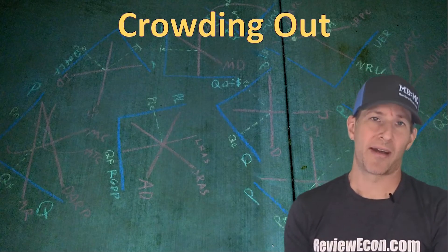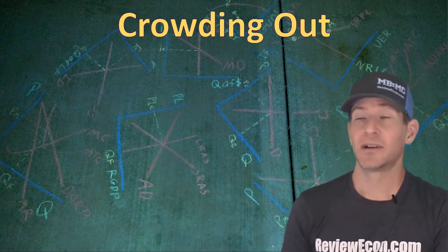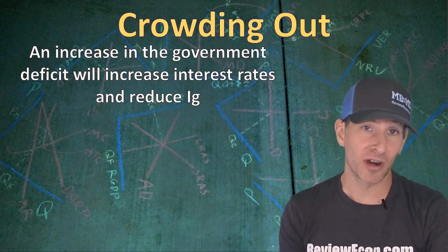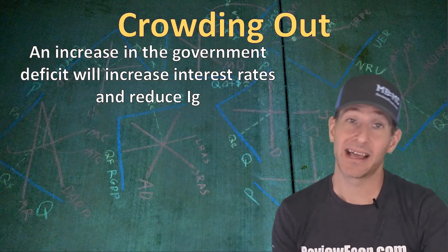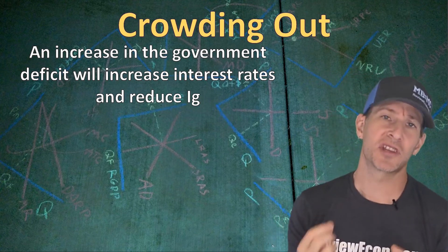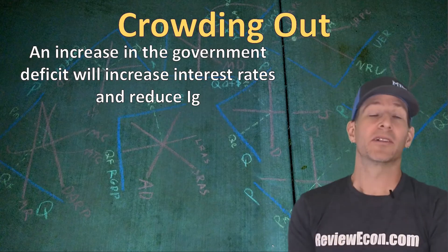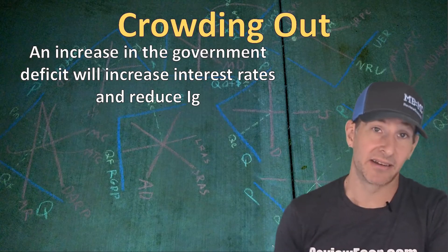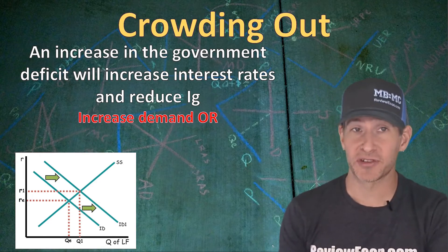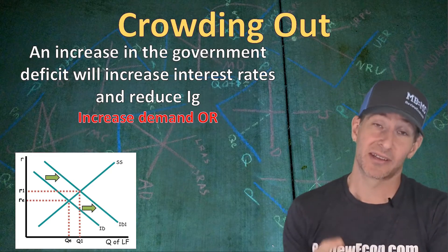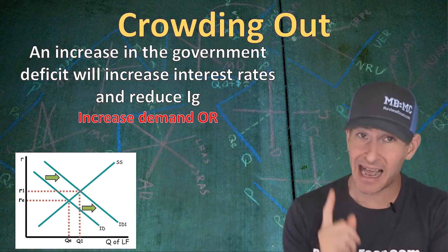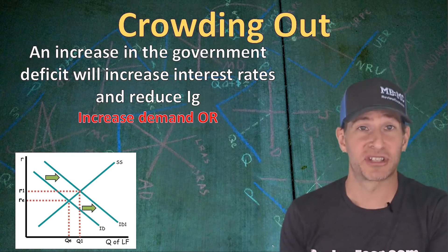The last thing we're going to talk about is crowding out. Crowding out is the idea that an increase in the government deficit — which increases government borrowing — is going to cause an increase in interest rates and a decrease in gross investment. When the government deficit spends, it must borrow the funds to pay for that deficit spending, and there are two ways of showing that impact on the loanable funds market. One way: the government borrows money and demands those funds alongside other businesses, increasing the demand for loanable funds, which raises the real interest rate and increases the quantity of loanable funds. However, this interest rate increase actually decreases the amount of private investment, because at higher interest rates businesses borrow less and therefore purchase less physical capital.